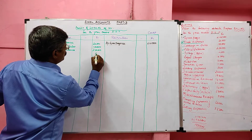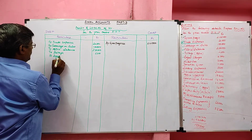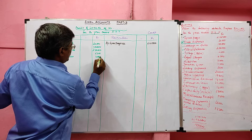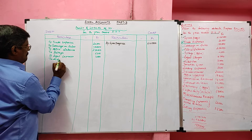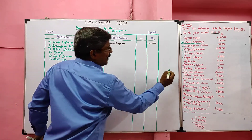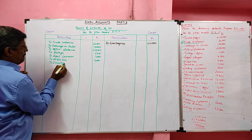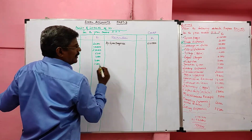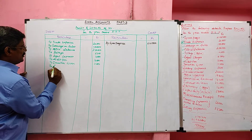Postage value is 2,200 rupees. Next, legal expenses are debited to the profit and loss account, value 4,000 rupees. Next, audit fee is debited to the profit and loss account, value 16,000 rupees. Next, donation given is also debited to the profit and loss account, value 11,000 rupees.